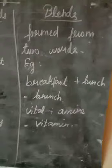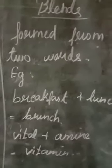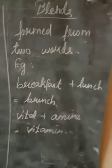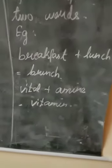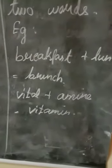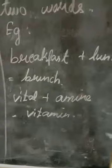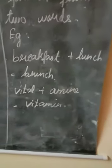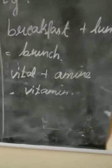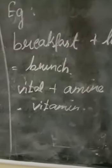And then blends. A blend is formed from two words, or maybe two or more other words. For example, breakfast plus lunch equals brunch. Next, vital plus amine gives us vitamin. So that is the difference between clipped words and blends.